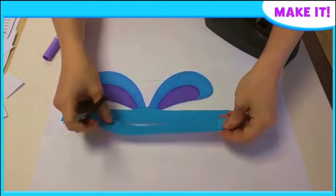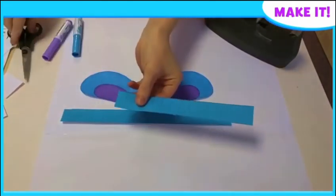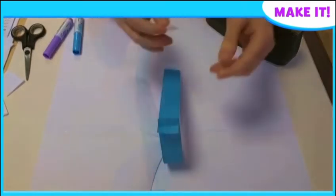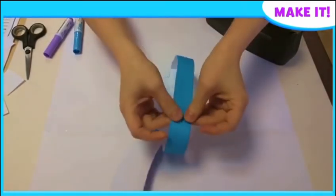On the paper strip with multiple lines, cut the headband to size using the dotted lines as a guide. Slot the ends of the paper strips together and use sticky tape to secure.